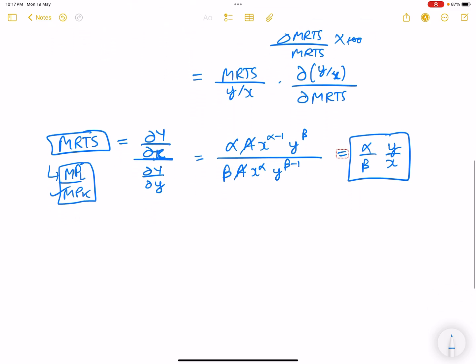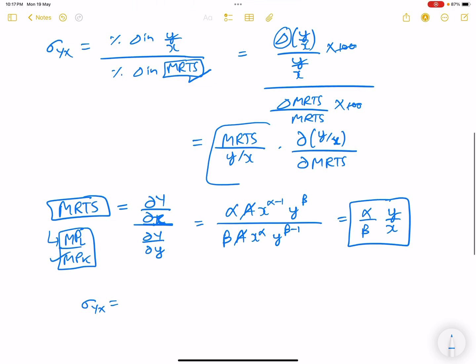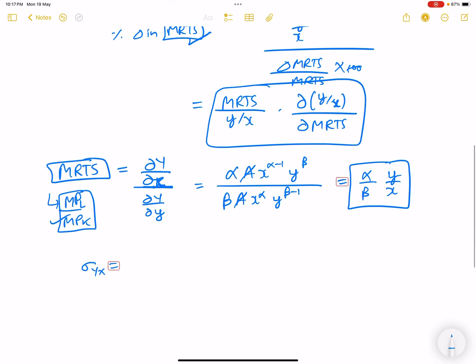Right, now the elasticity of substitution. MRTS is α/β times y by x, delta into y by x, whole divided by y by x into del y by x. So del y by x is nothing but, let it be fixed only as of now.